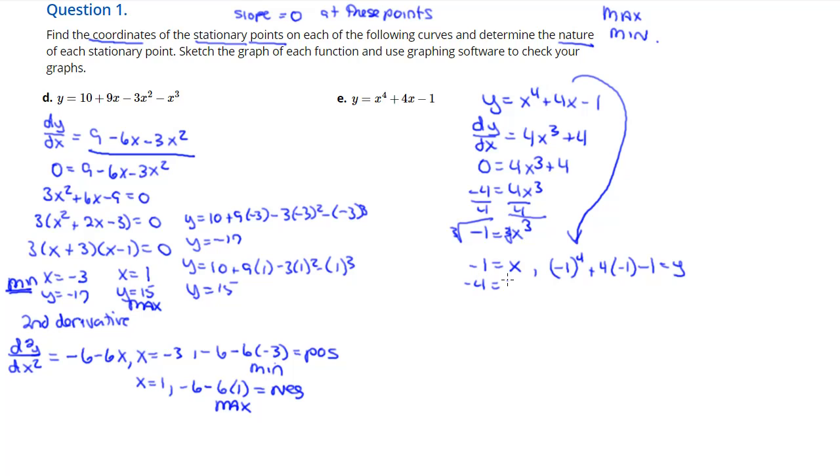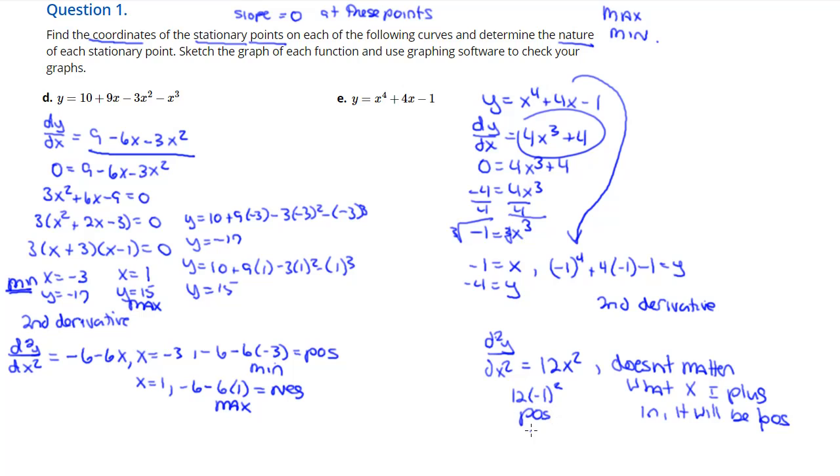And then we take the second derivative, which means take the derivative of the derivative. In this case it's going to be 12x squared. Well, we don't plug any points into this one because there's nothing going to come out of this one except for positive numbers. But go ahead, plug a negative 1 in there - 12 times negative 1 squared, obviously that's going to be positive. So that means this is a minimum point.